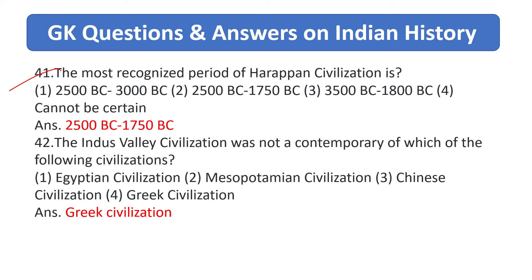The most recognized period of Harappan civilization is answer is 2500 BC to 1750 BC. The Indus Valley civilization was not a contemporary of which of the following civilizations? Answer is Greek civilization.